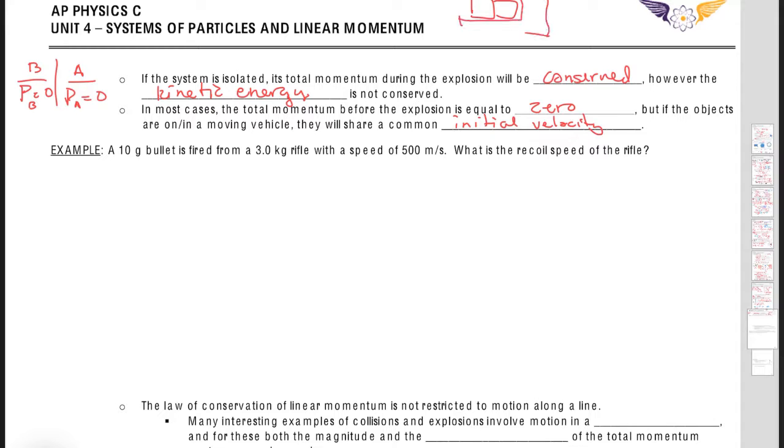But you may find some random case where the objects are on, like, let's say, a moving truck. And something happens, right? But they're going to share a common initial velocity in this scenario here with the truck, whatever the truck's traveling at. And then you can do your calculations from there.